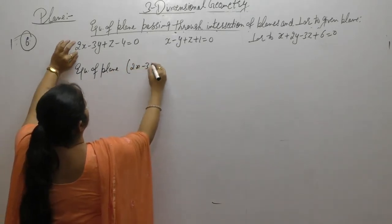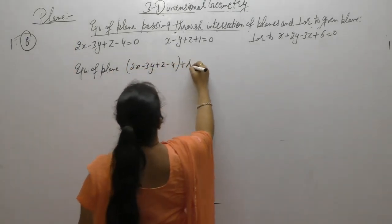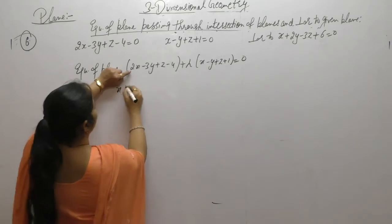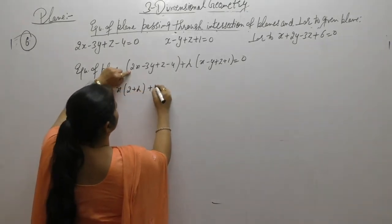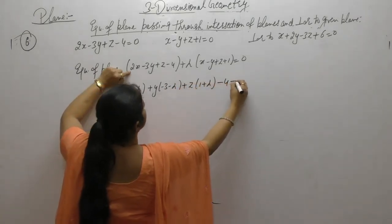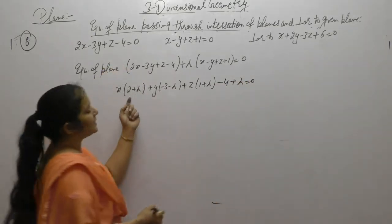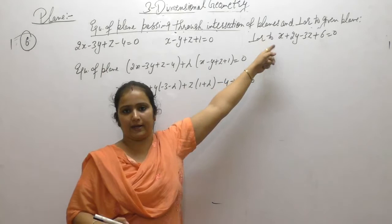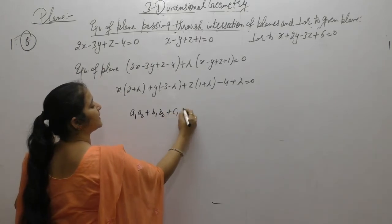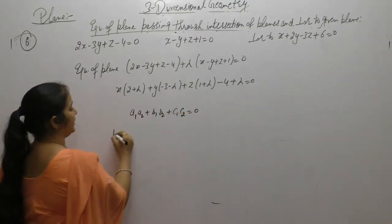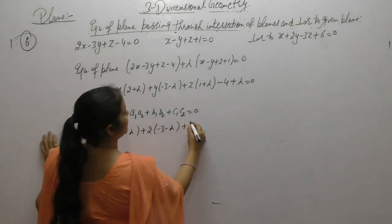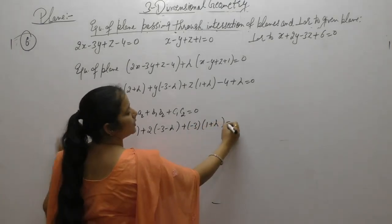The equation of the plane passing through the intersection of those two planes is: first equation + λ × second equation. From this we get: x(2 + λ) + y(−3 − λ) + z(1 + λ) + (−4 + λ) = 0. Now since this plane is perpendicular to the given plane, using a₁a₂ + b₁b₂ + c₁c₂ = 0: 1×(2 + λ) + 2×(−3 − λ) + (−3)×(1 + λ) = 0.